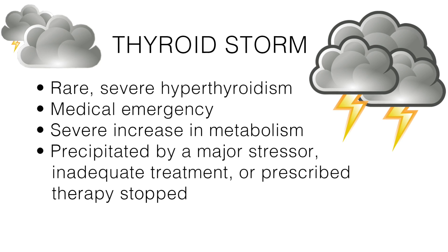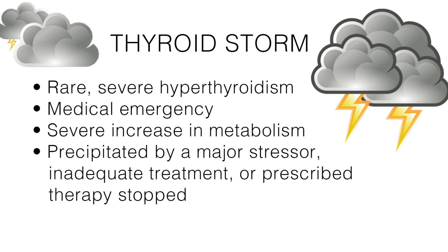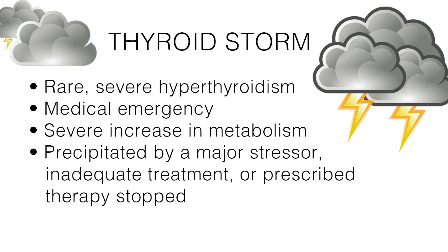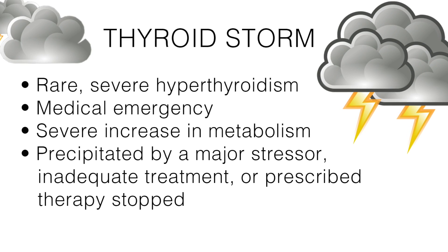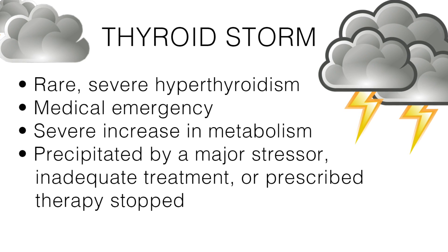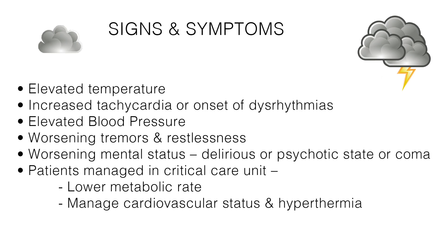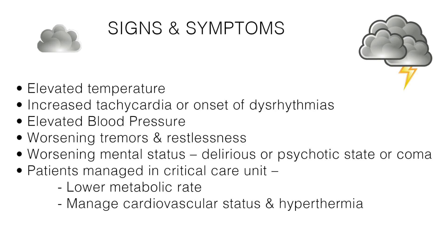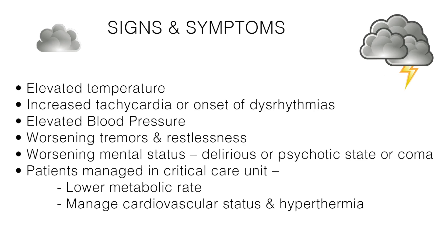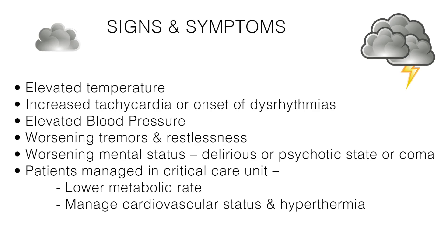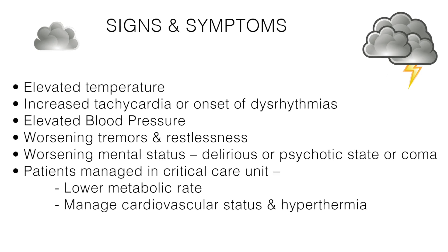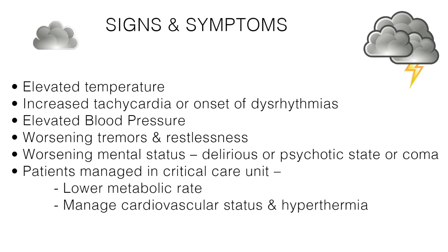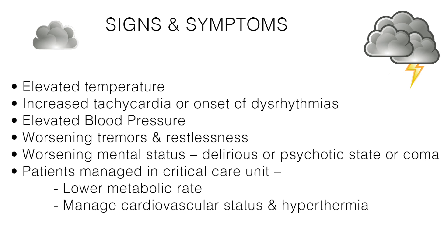Thyroid storm is a rare severe manifestation of hyperthyroidism, usually seen in a patient with Graves' disease. It is a medical emergency manifested by a severe increase in metabolism, usually precipitated by a major stressor such as infection, trauma, or surgery. It can also occur when a patient is inadequately treated or stops taking prescribed therapy. Signs and symptoms include elevated temperature, increased tachycardia or onset of dysrhythmias, elevated blood pressure, worsening tremors and restlessness, worsening mental status, and a delirious or psychotic state or coma. Patients with thyroid storm are managed in a critical care unit with focused care on lowering their metabolic rate as fast as possible and managing their cardiovascular status and hyperthermia.